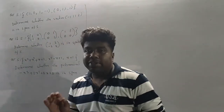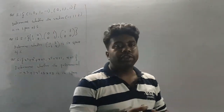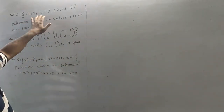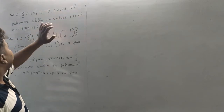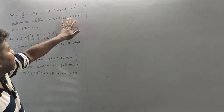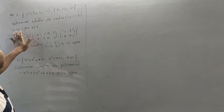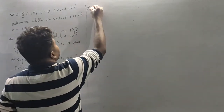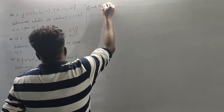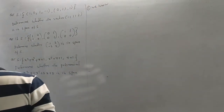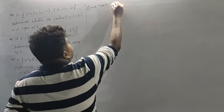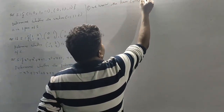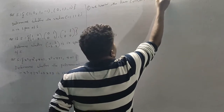The first question: S = {(1,0,1,-1), (0,1,1,1)}. Determine whether the vector (-1,1,1,2) is in Span S. We use the concept of linear combination of vectors.